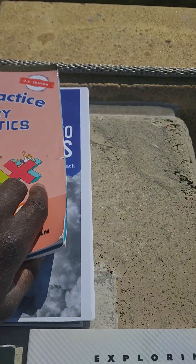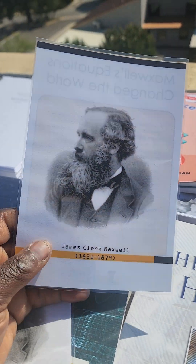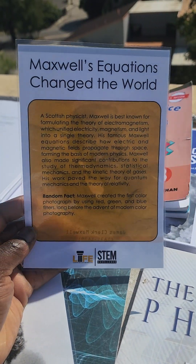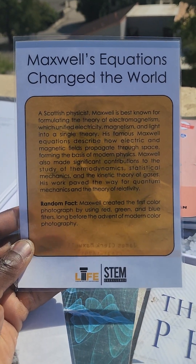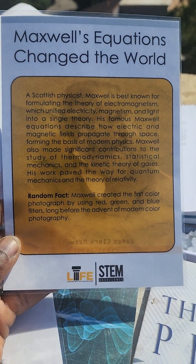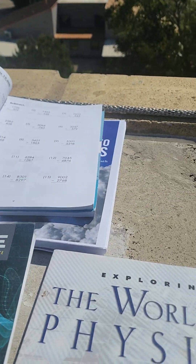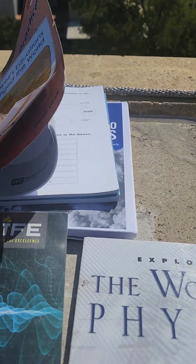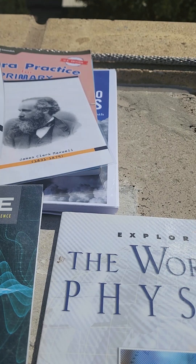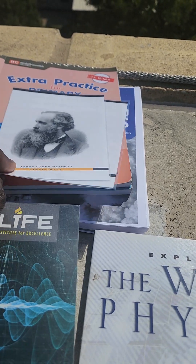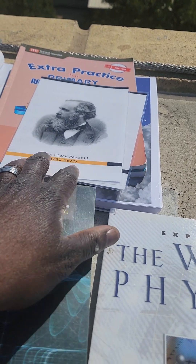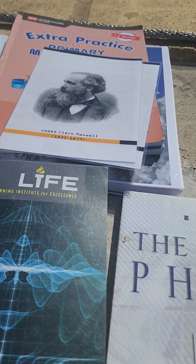Not only do we want to do that, we also want to provide students with flashcards that allow them to learn about people like James Clark Maxwell. On the back of the card it tells you something about Maxwell. This is one of our products from the Learning Institute for Excellence in the STEM Excellence program. We have these flashcards coming out in December covering many mathematicians, all the mathematicians you need to know, all the physicists, all the chemists.